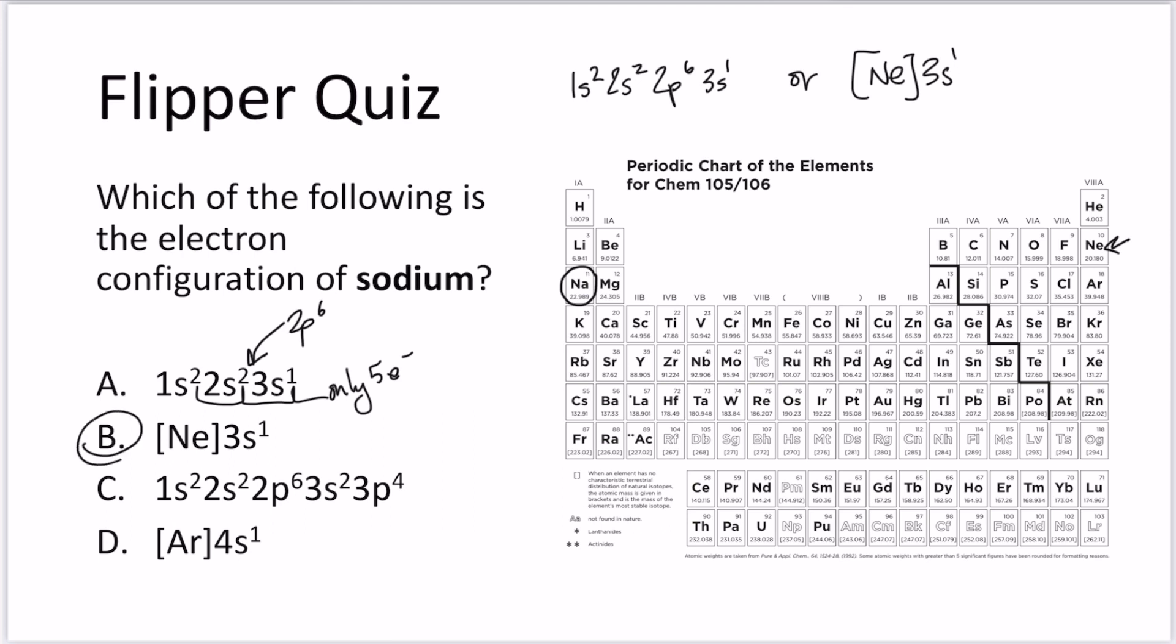So B, of course, is our correct answer, and C, 1s2 2s2 2p6 3s2 3p4, that's the electron configuration for sulfur. So noticing that on the periodic table there are not names, a lot of people will confuse sodium and sulfur because they think, oh, it starts with S, that one must be sodium. So watch out for that. And then [Ar] 4s1 would be potassium, which is just below sodium. So that one is incorrect.